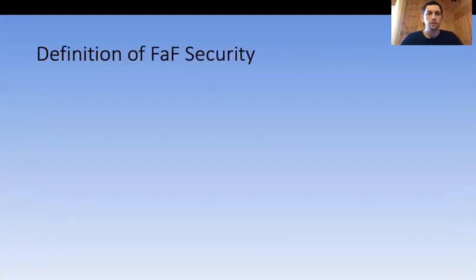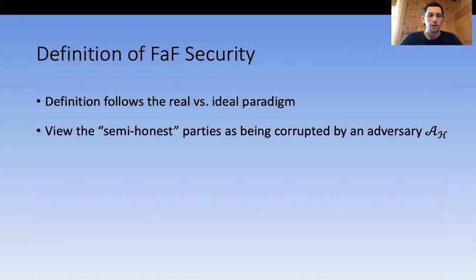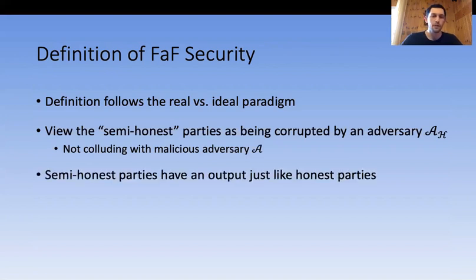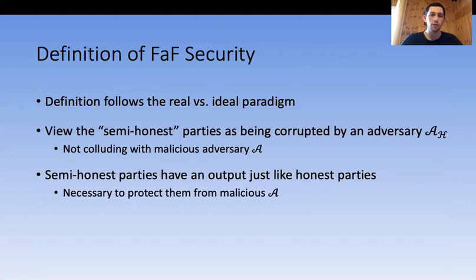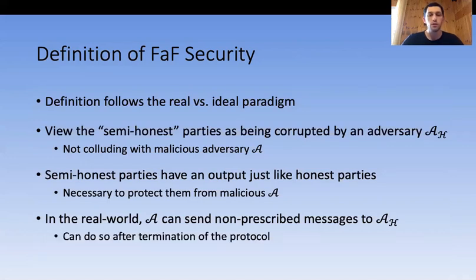Let me now give a more formal definition of FaF security. The definition follows the real versus ideal paradigm. It's convenient to view the semi-honest parties as being corrupted by an adversary that is not colluding with the malicious adversary. The semi-honest party has an output just like honest parties, which is necessary to protect them from the malicious adversary. In the real world, we consider adversaries that can send non-prescribed messages to the semi-honest adversary, even after the protocol is determined.